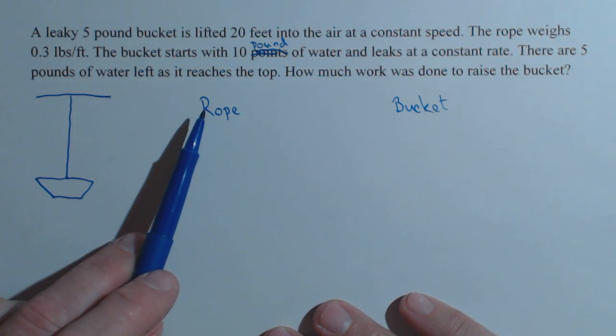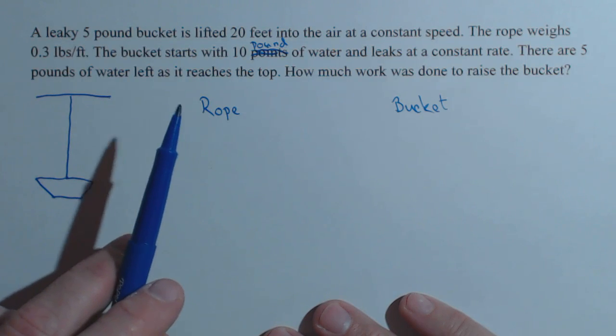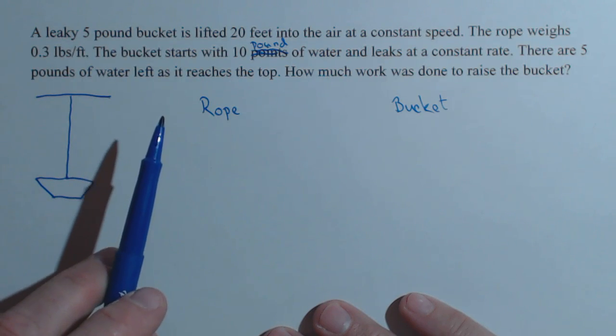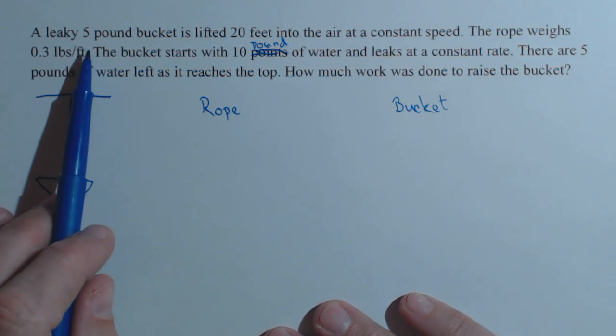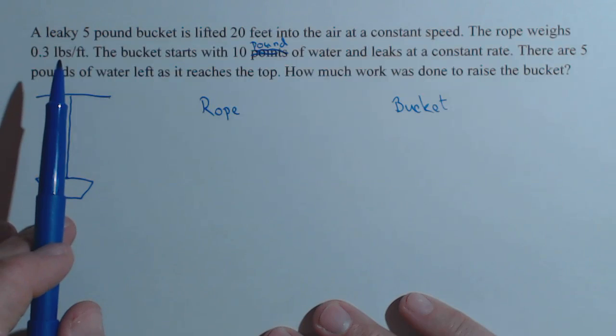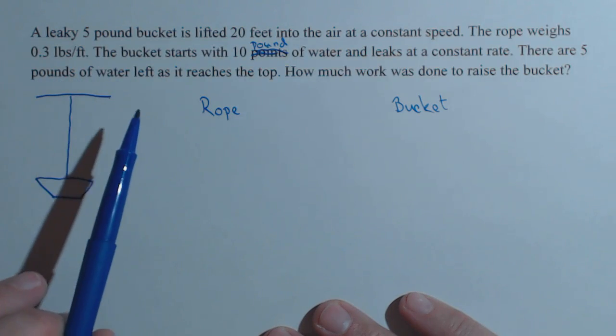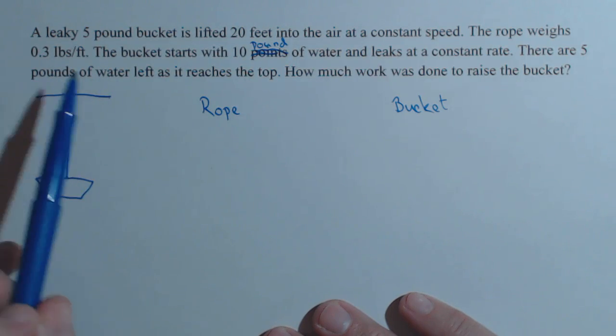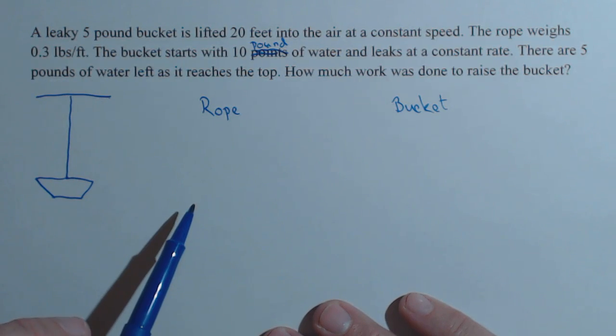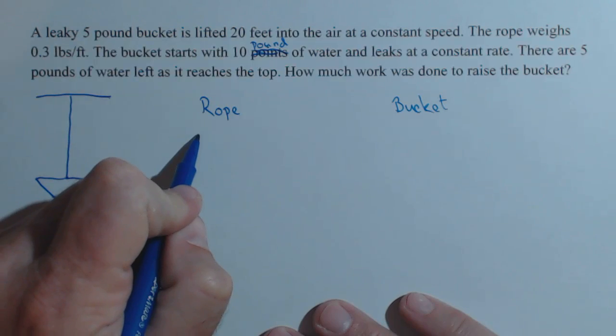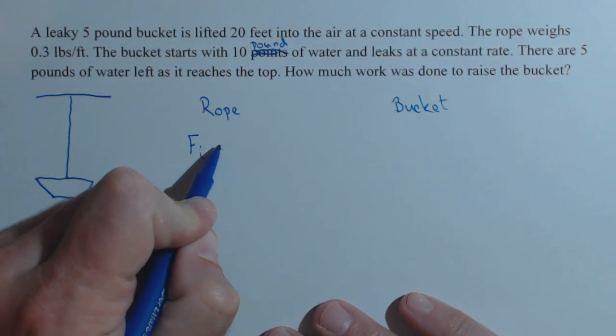So for the rope, first thing we'd like to do is find the mass of the ith slice, or in this case, the force, because we're in pounds per feet. If we were looking at newtons per meter, we might go ahead and do the mass first and then convert it over to a force. But first thing we're going to do is look at the force on the ith slice.